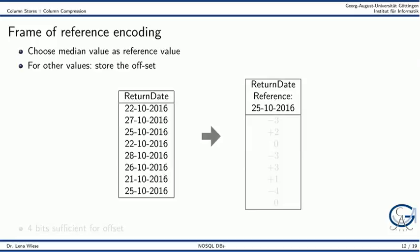The next option is frame of reference encoding. From all values in a column we choose some median value as the reference value, and for all other values we just store the offset to the reference value. As an example, we use the return date column and choose the 25th of October as the reference value. The first value is three days before the reference date, so we put minus 3. The next date is two days after the reference value, so we put plus 2. If the row contains the reference value we put 0. The next row is again three days before the reference date.